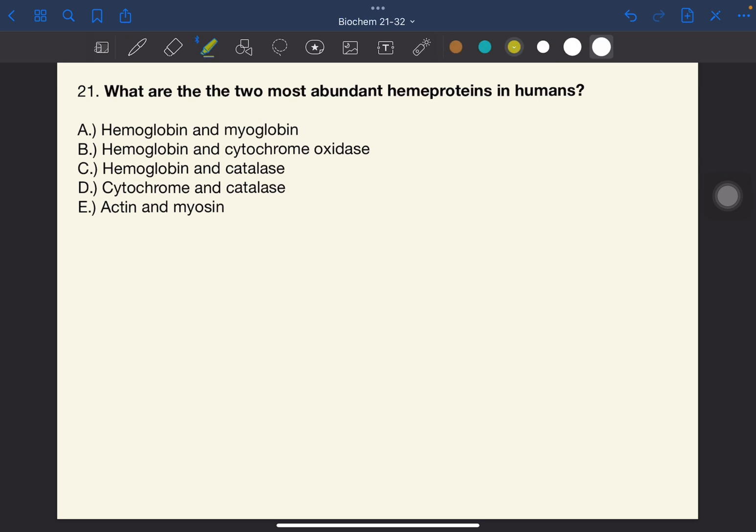The answer to this one is A, hemoglobin and myoglobin. From the word itself, heme proteins are a group of proteins that contain heme as a prosthetic group. The role of the heme group depends on the specific protein. For example, the heme group of cytochrome oxidase is an electron carrier, while the heme group of the enzyme catalase is part of the active site that catalyzes the breakdown of hydrogen peroxide. In the case of hemoglobin and myoglobin, the heme group serves to reversibly bind to oxygen.